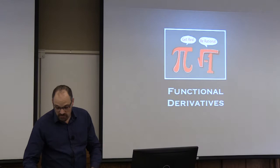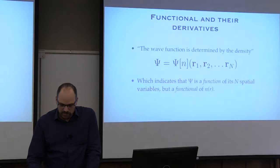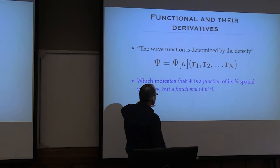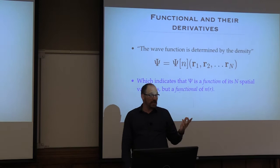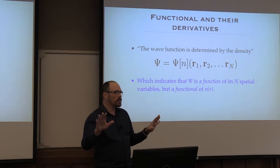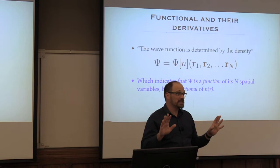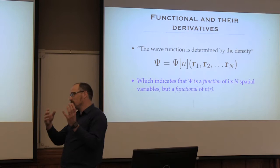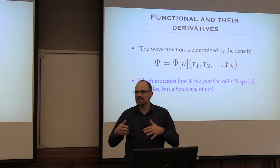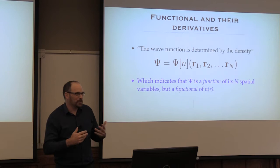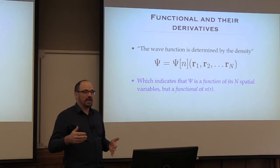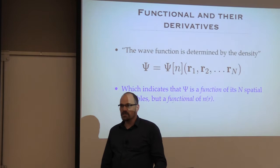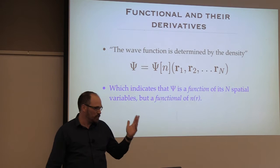Now, functional derivatives. Remember that the Hamiltonian and density have a one-to-one correspondence — Hohenberg, Kohn, and Burke established that there is a one-to-one correspondence between Hamiltonian and density. If you know the density, you know the Hamiltonian — in principle. So the many-body wave function is completely described by the Hamiltonian. In other words, you can also say that the wave function is a functional of the density.